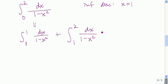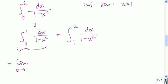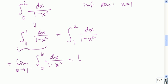The original improper integral converges only if both pieces converge. So we pick one to evaluate first — if it diverges, we're done; if it converges, we go on to the next one. Starting with the first piece, we write it as the limit as b goes to 1 from the left of the integral from 0 to b of 1 over 1 minus x squared dx.